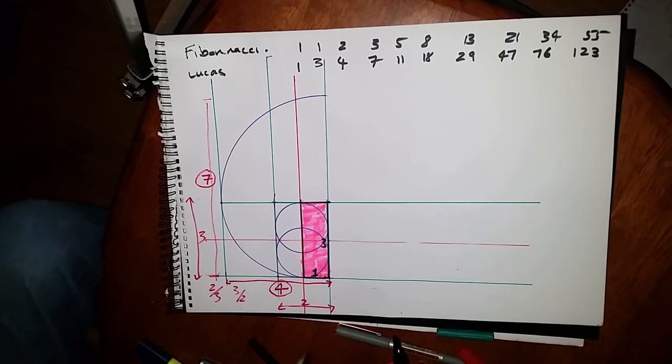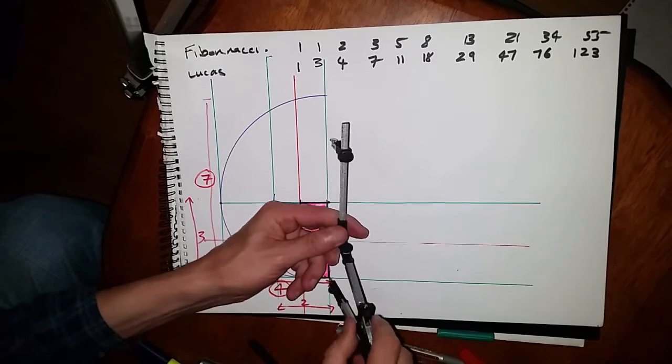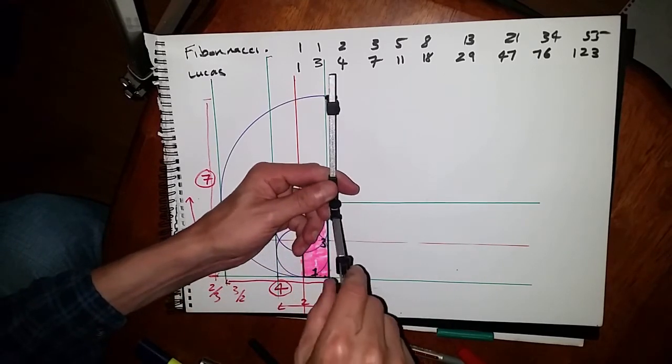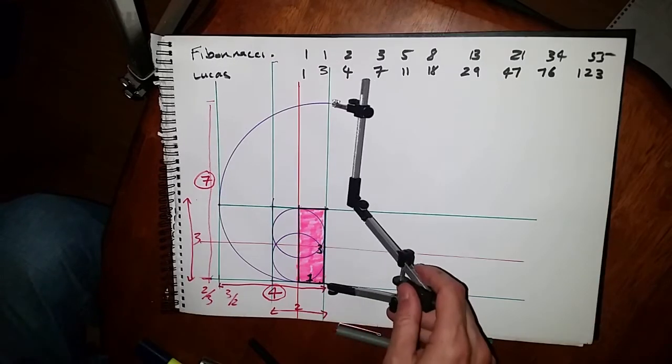Now we've started to develop this spiral. We've begun with a 1 to 3, then we built a 3 to 4, now we have a 4 to 7. Just like the Lucas numbers: 1, 3, 4, 7.